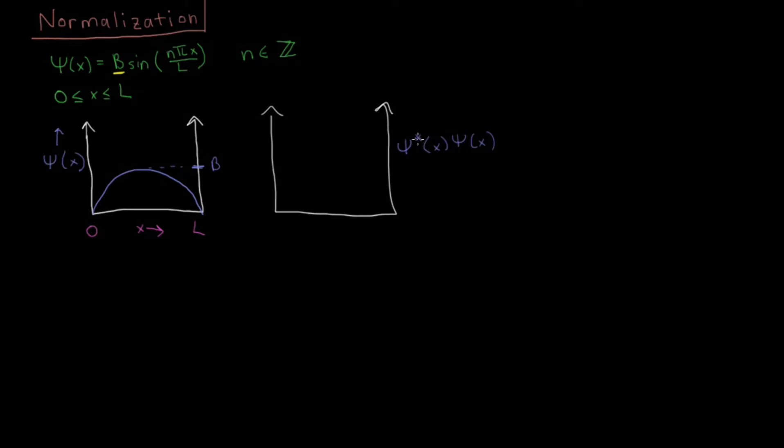So psi star times psi has this value, and if we look at some small region where we're going from zero to L, if we have some tiny region dx, then the interpretation of the wave function is that the wave function times its complex conjugate, so psi star psi dx, equals the probability of the particle being located somewhere between x and x plus dx. The probability that the particle is located somewhere between x and x plus dx is proportional to this magnitude of the wave function squared.